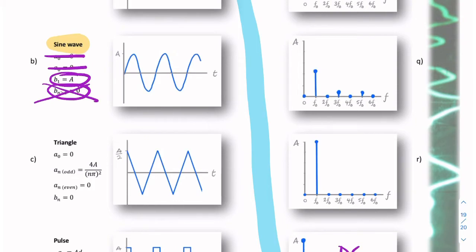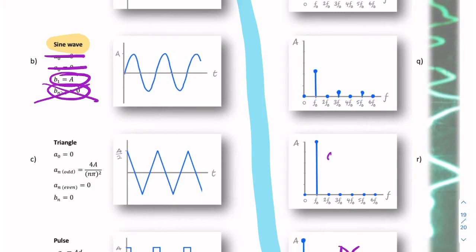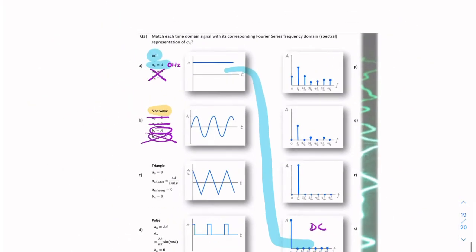Remember, the discrete axis could have n = 1, 2, 3, 4, 5, 6. In this case, the axis is annotated with frequencies. So this component here is your component c1 — this is c0, c1, c2, c3, etc. Remember, c is simply the square root of a_n squared plus b_n squared. So if all the a's are zero, then c will equal b. So we now have a match — this second signal matches that spectrum.